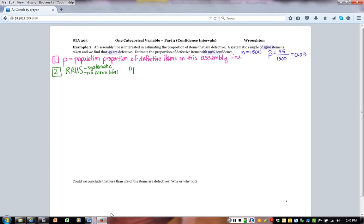Then we need our n times our p-hat. So n is 1500, p-hat is 0.03, so we get 45, which is at least 10. Notice 45 was how many of the items actually were defective, so that's really what that number is doing there. Then we take our n times one minus p-hat, which is going to give us how many of the items were not defective, which is also at least 10. So all of our conditions are met here.